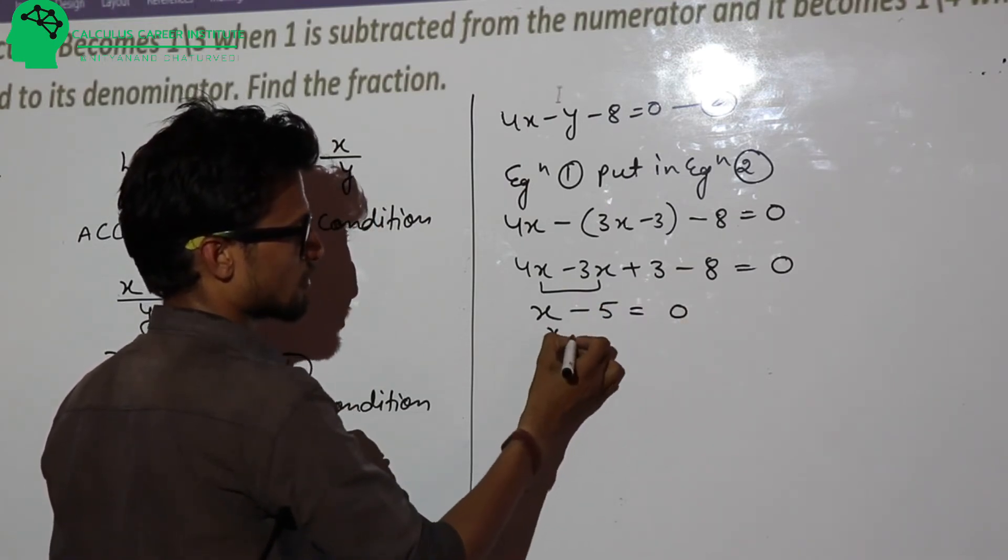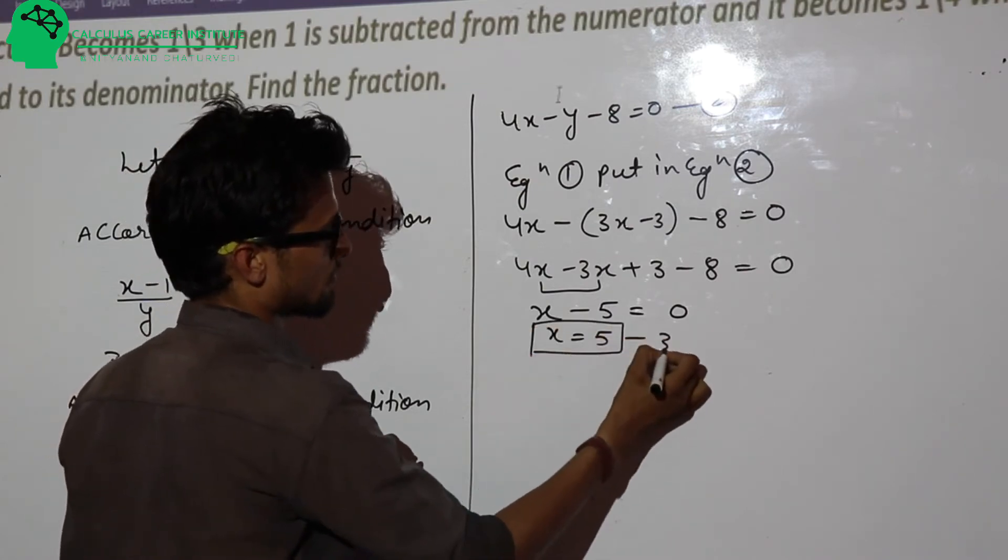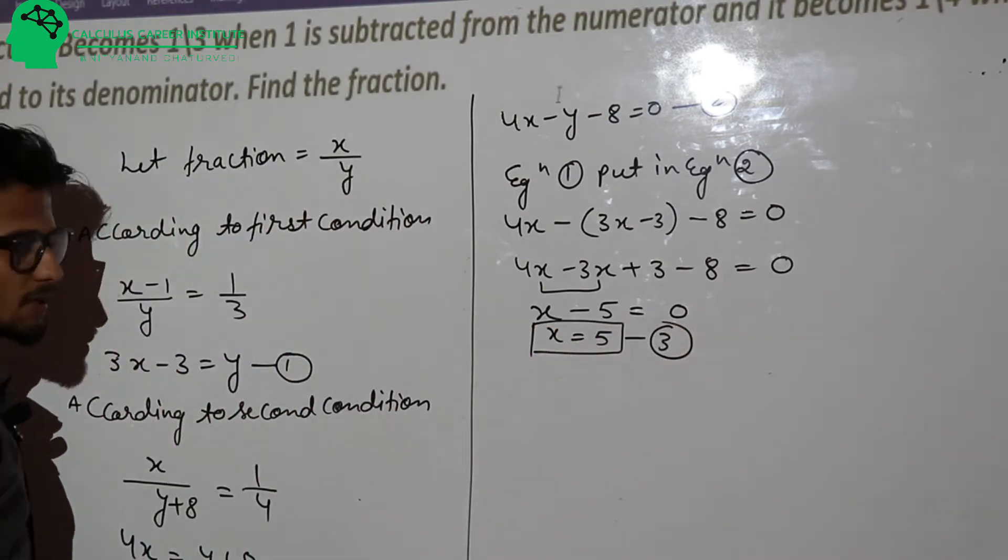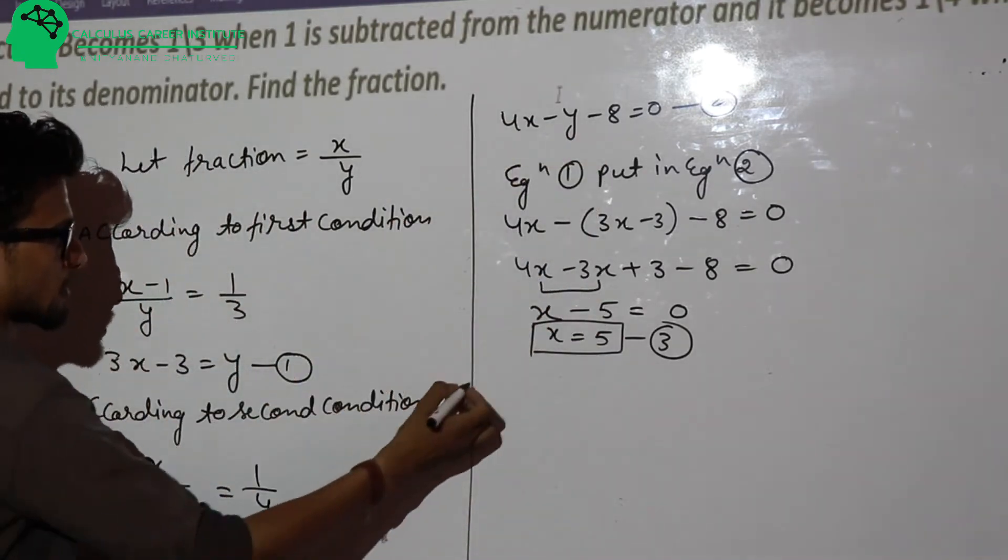What does x equal? x minus 11 equals 0. So x equals 11. This is equation number 3.